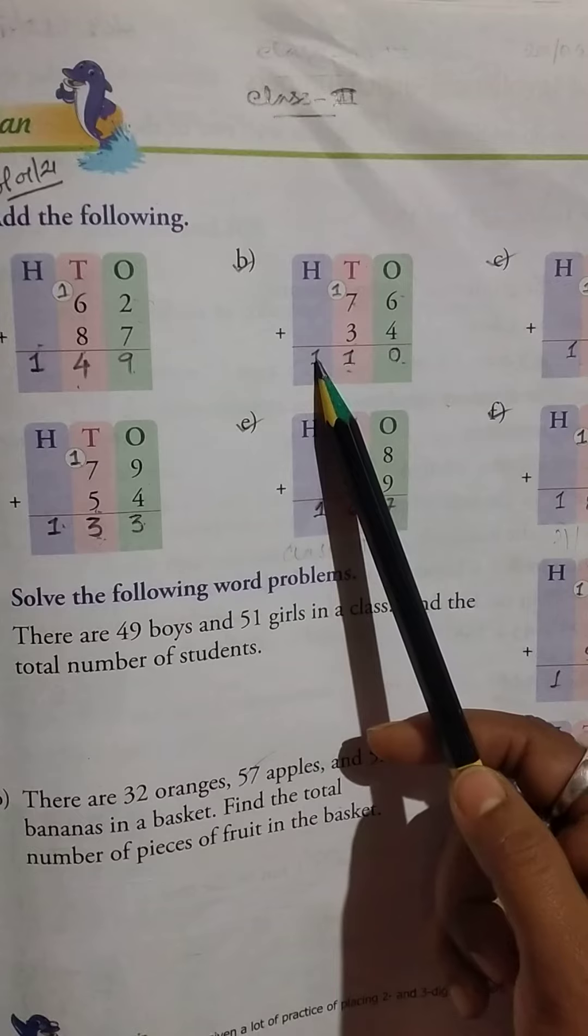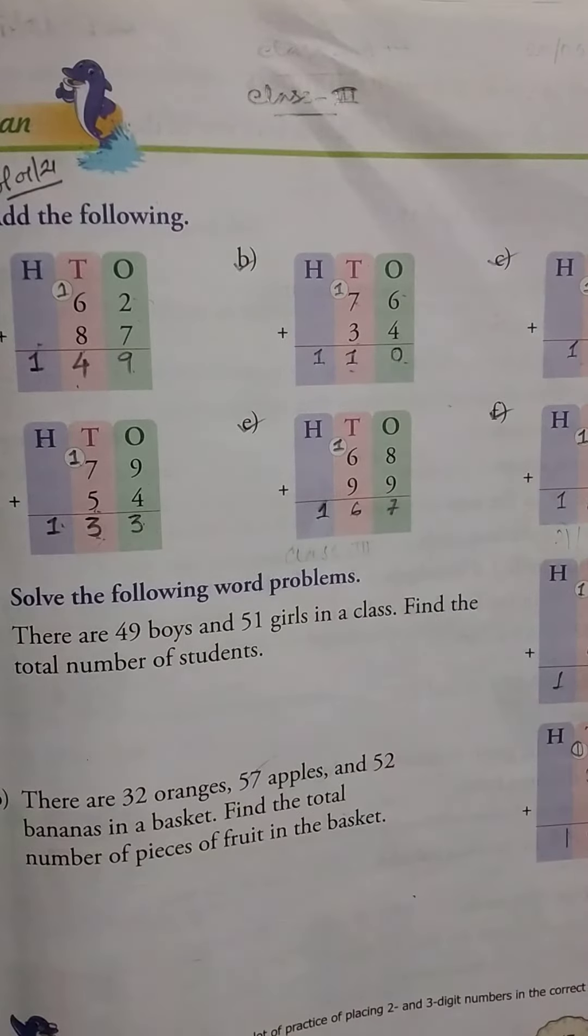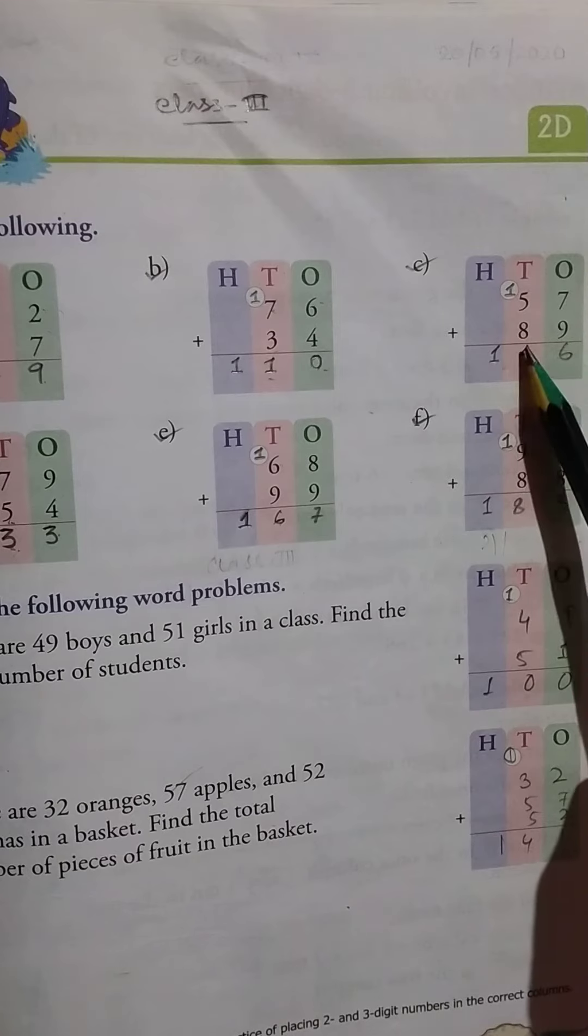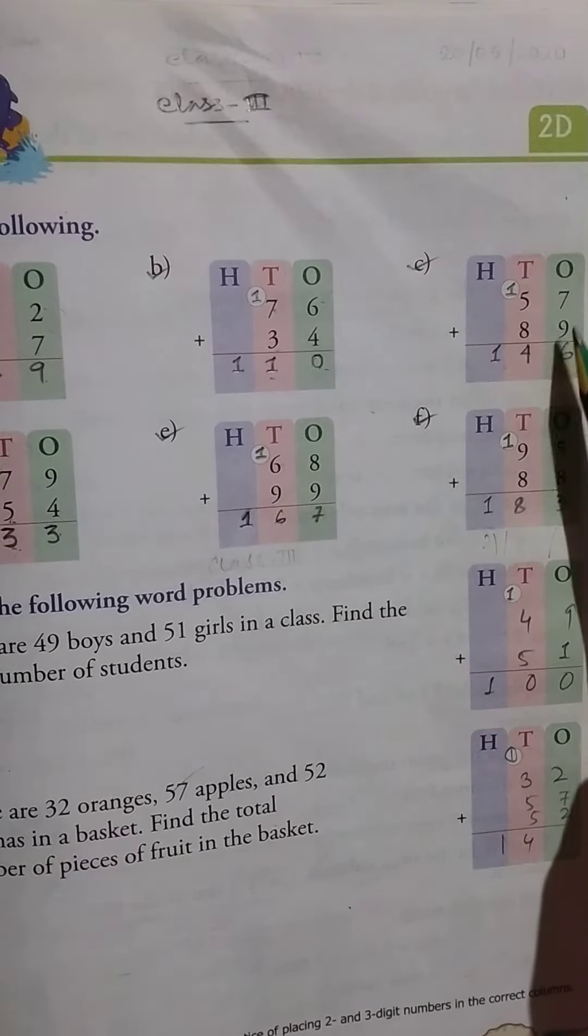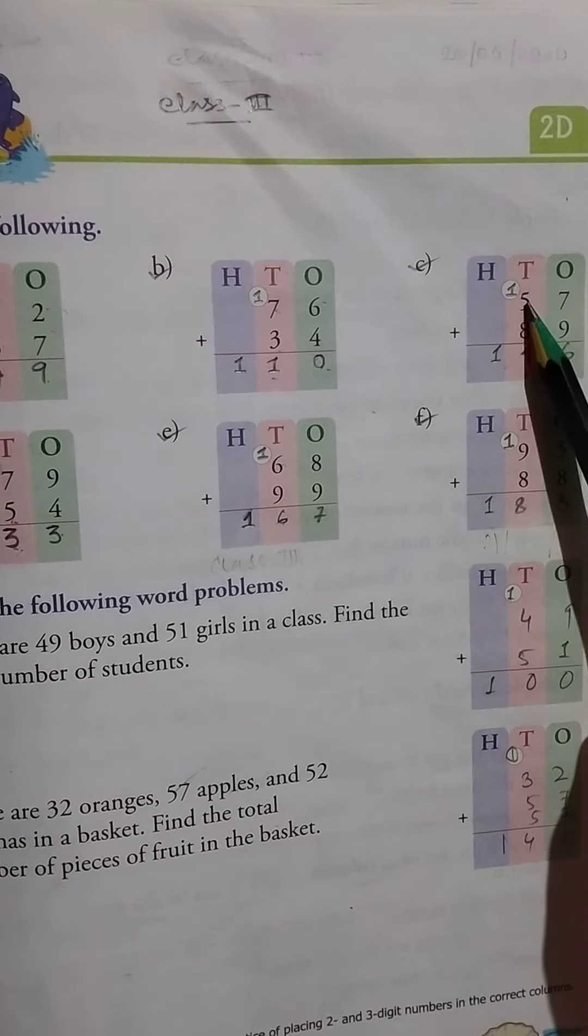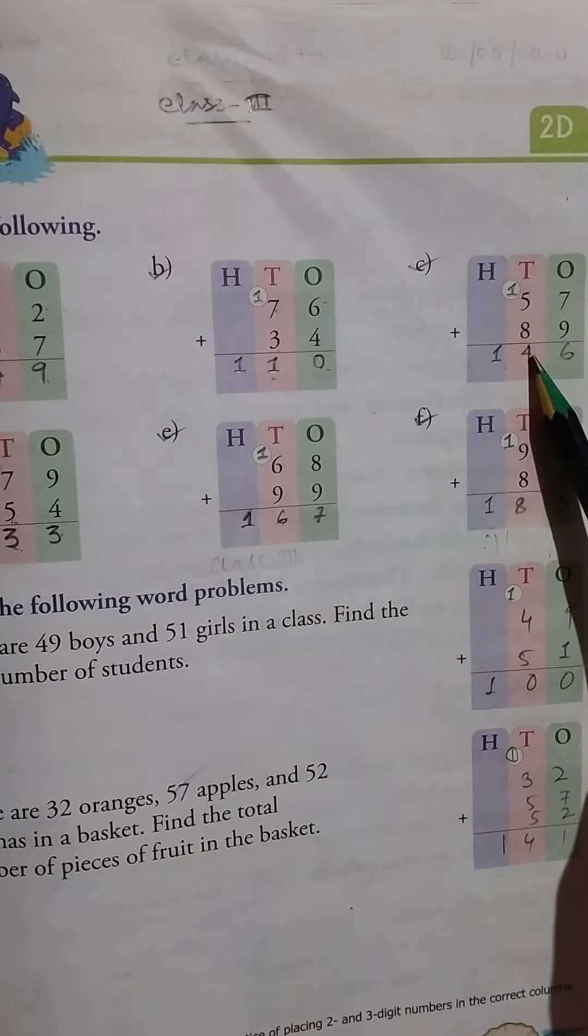Then number C: 57 plus 89. Seven plus nine equals sixteen. Write six here and carry one here. One plus five is six, plus eight equals fourteen. Write four here and carry one. So the answer is 146.